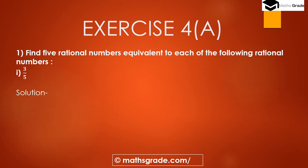Question number 1: Find the 5 rational numbers equivalent to each of the following rational numbers. The first part is 3 divided by 5. We have to find the 5 equivalent rational numbers of the rational number 3/5.